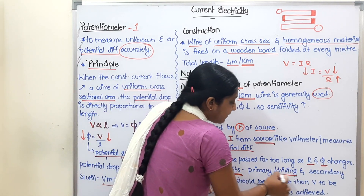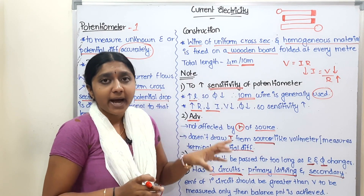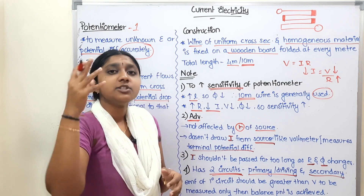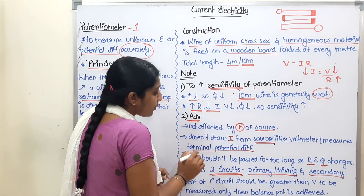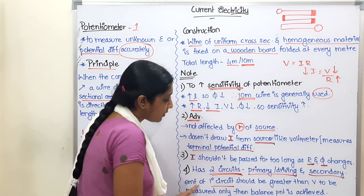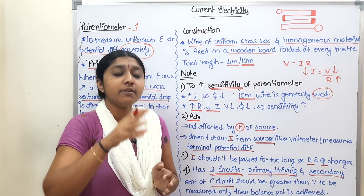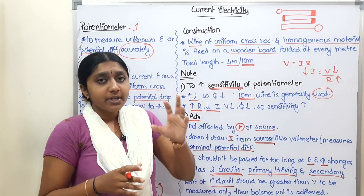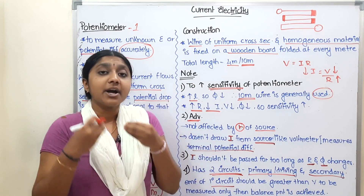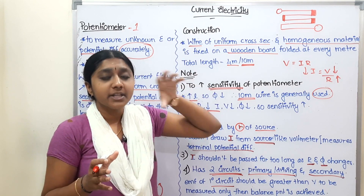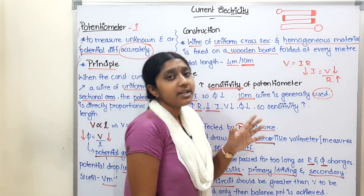The primary circuit contains the main battery (driver battery). The secondary circuit has the cell whose EMF or internal resistance is to be measured. An important condition is that the EMF of the primary circuit must be greater than the potential difference to be measured. Only then can we find a balance point. We will see the full derivation in the next video.